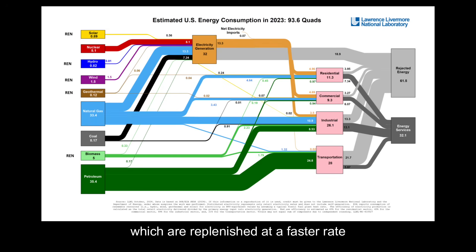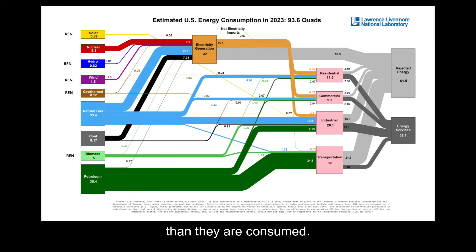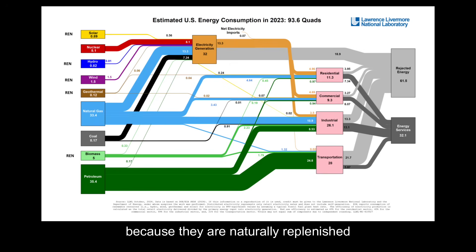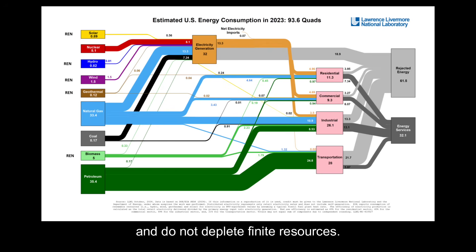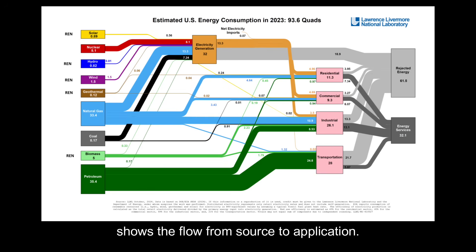replenished at a faster rate than they are consumed. These sources are considered renewable because they are naturally replenished on a human timescale and do not deplete finite resources. The Lawrence Livermore Laboratory diagram shows the flow from source to application.